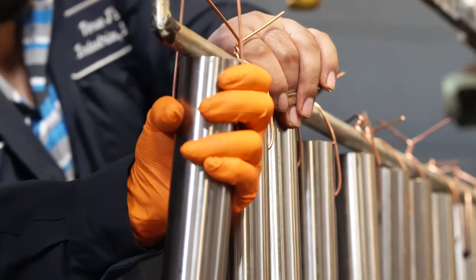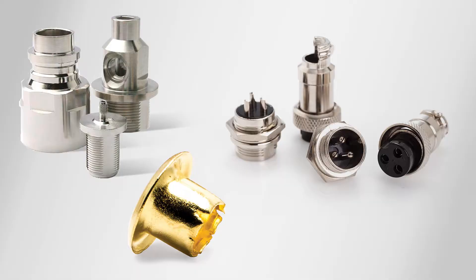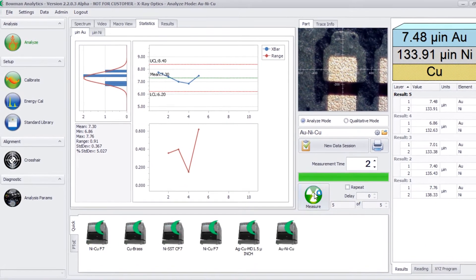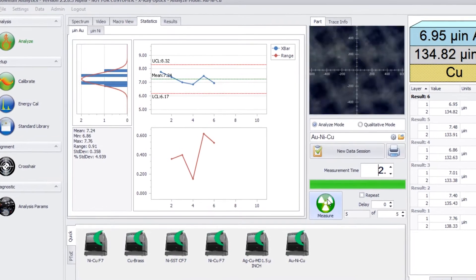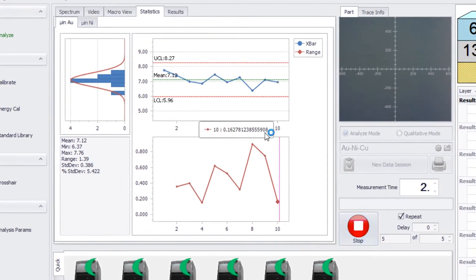Bowman XRF systems are also used wherever metal products need to be protected from corrosion and wear. Bowman XRF coating measurement systems allow manufacturers and quality engineers to assure that plating meets customer specifications.